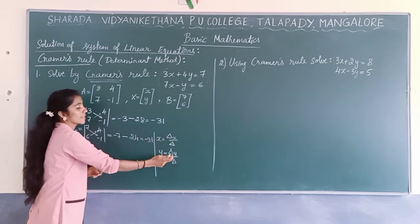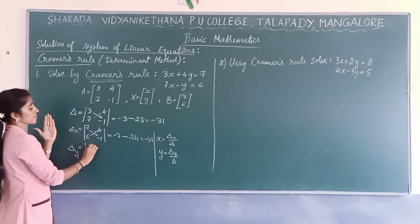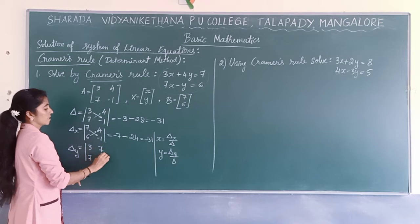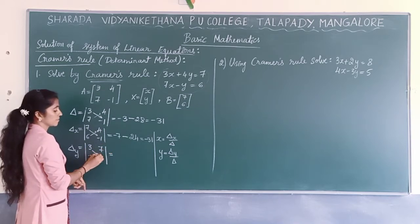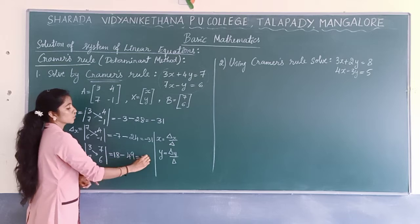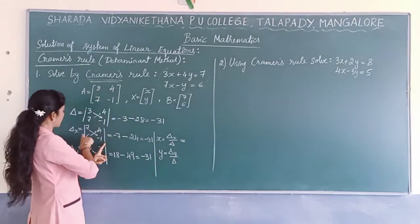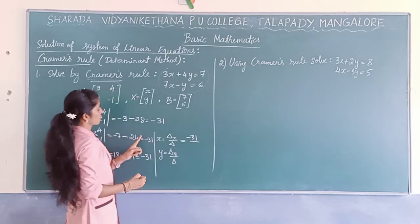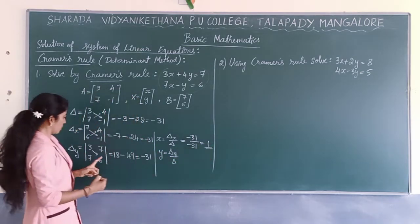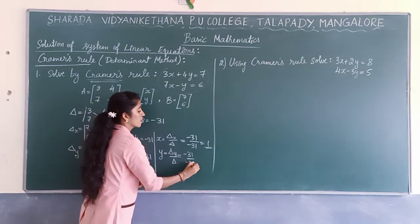Now for delta_Y, the coefficient of x column stays as 3 and 7, and we replace the coefficient of y column with 7 and 6. Delta_Y = 3×6 - 7×7 = 18 - 49 = -31. So x = delta_X / delta = -31 / -31 = 1. And y = delta_Y / delta = -31 / -31 = 1.